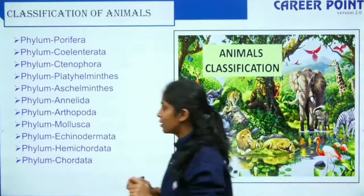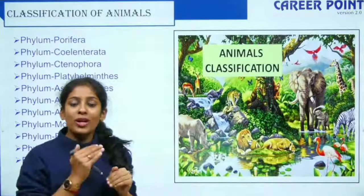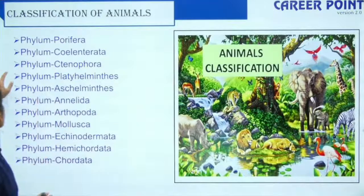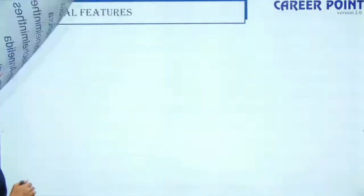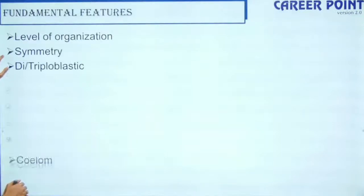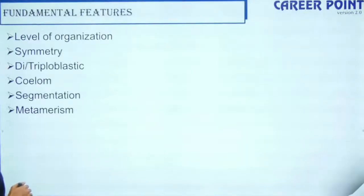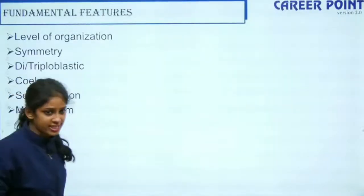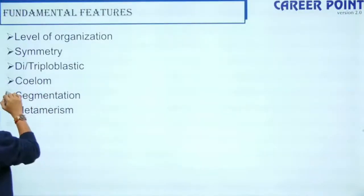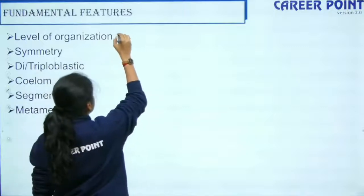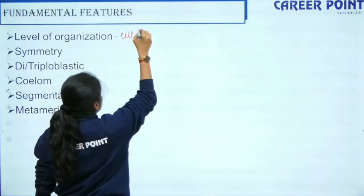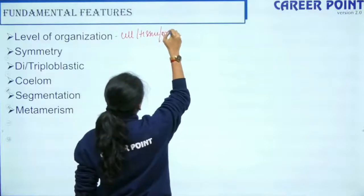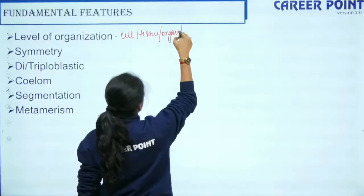I'll tell you a trick to remember all the phyla. Before we dwell into each of these phyla, you have to understand the fundamental features on which we have classified them. There are six points. The first is the level of organization — whether it has cell level, tissue level, organ level, or organ system level organization.